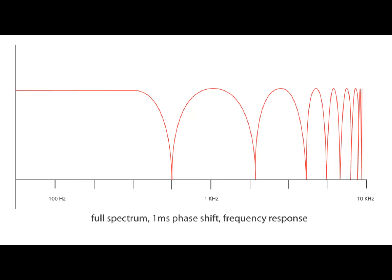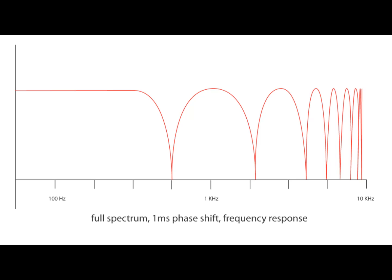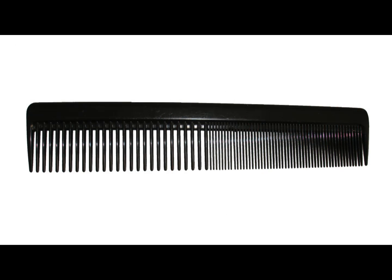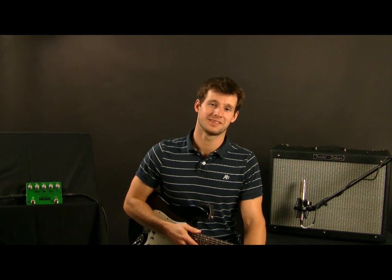And just as the peaks repeat, a valley will occur at every multiple of the time shift plus one half. So at 1.5k, 2.5k, 3.5k, etc., we'll all be out of phase as well. In between the peaks and valleys, there's a continuous shift from reinforcing to cancelling — this is why the graph has smooth, curving lines. All of the peaks and valleys together are called a comb filter because of the way they look like a comb on the frequency graph. So if we stopped right here, we'd basically have a flanger. Most flangers take the phase shift and modulate it up and down to give a sweeping effect to the comb filter.